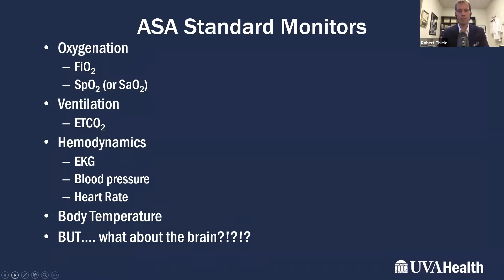For oxygenation, we measure oxygen delivery with FiO2, and we measure oxygen in hemoglobin with our pulse oximeter. For ventilation, we use end-tidal CO2. For hemodynamics, we have three different measures: we measure heart rate, blood pressure, and we also continuously monitor the EKG. We measure body temperature in all patients.